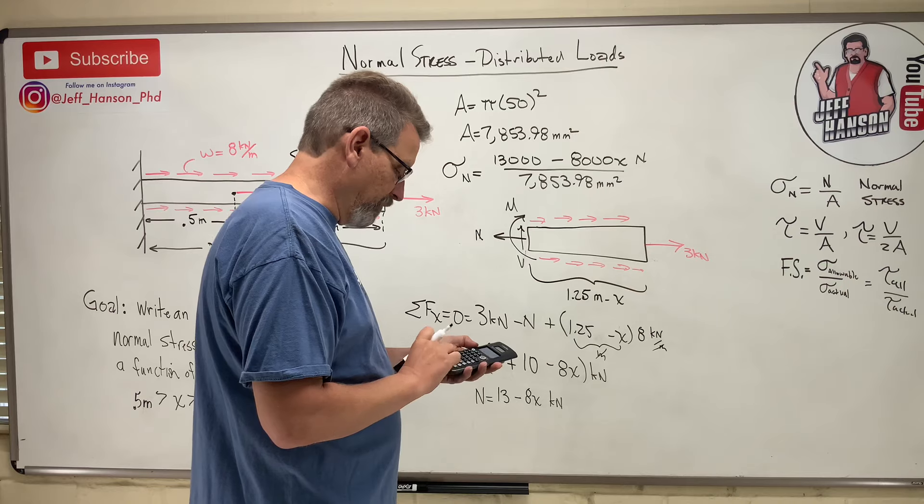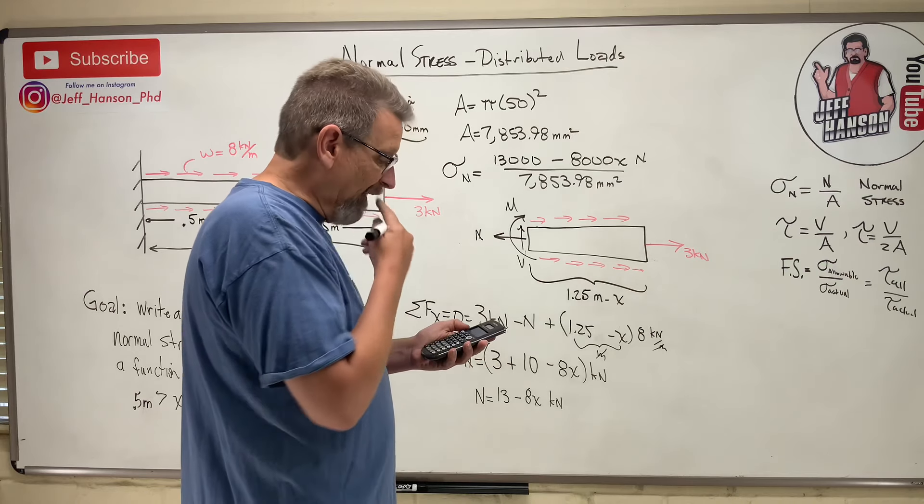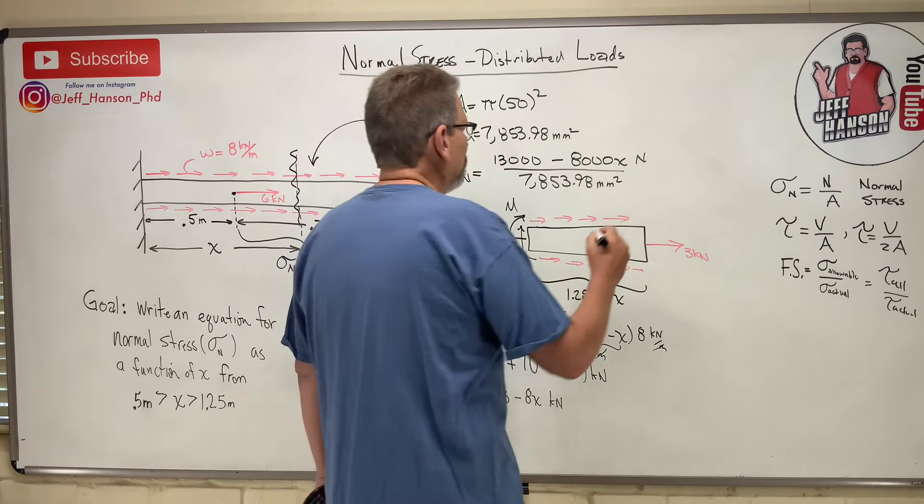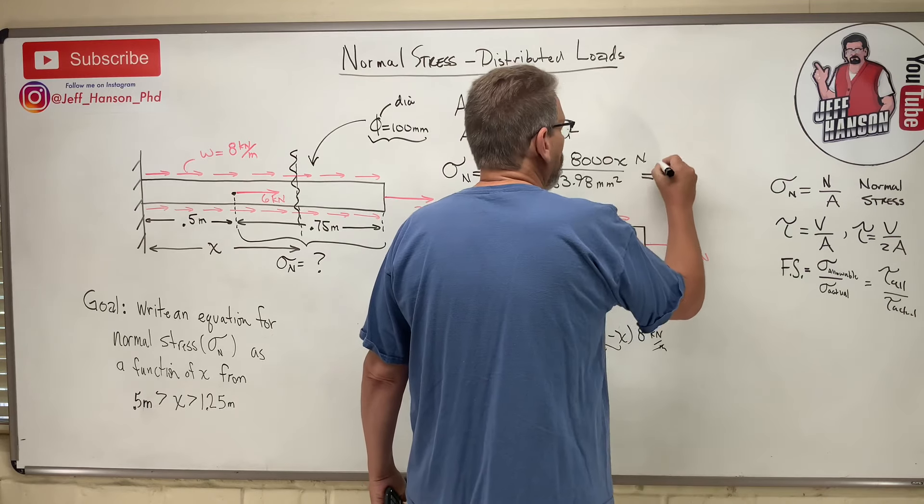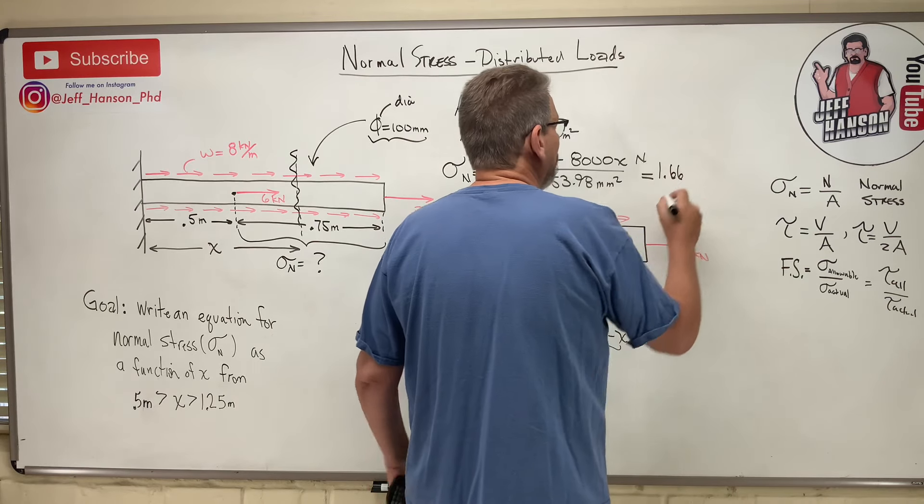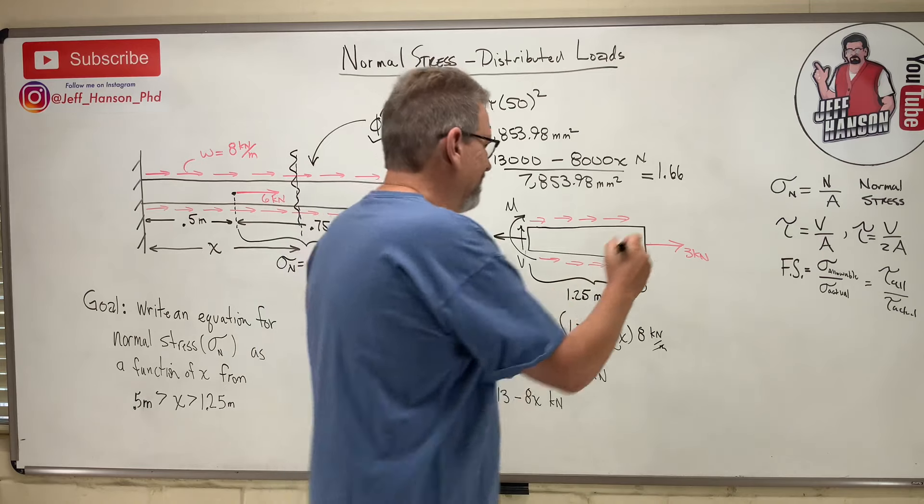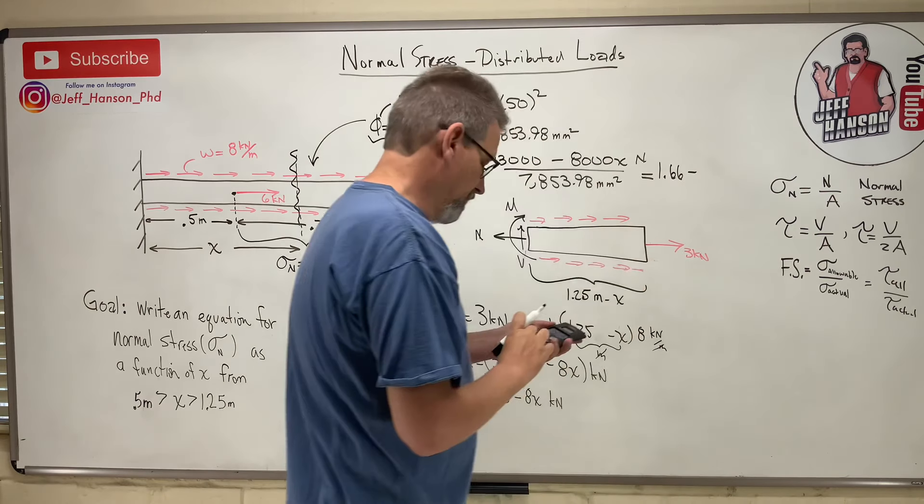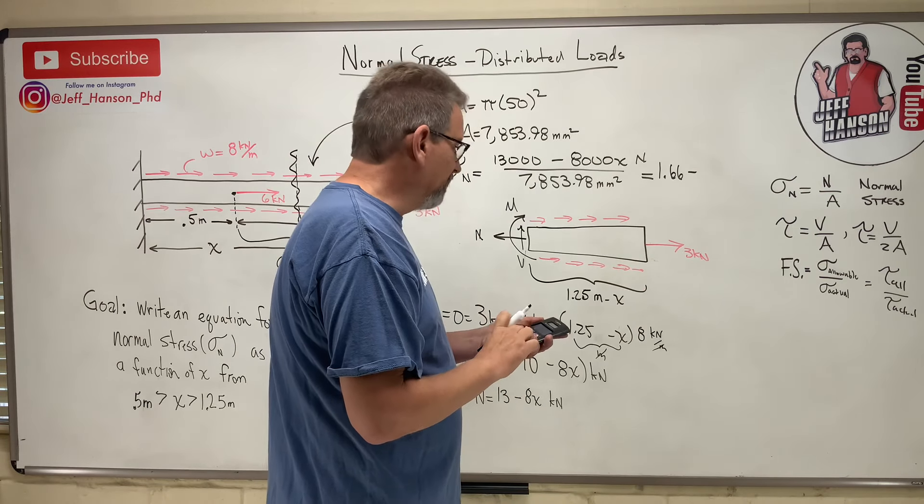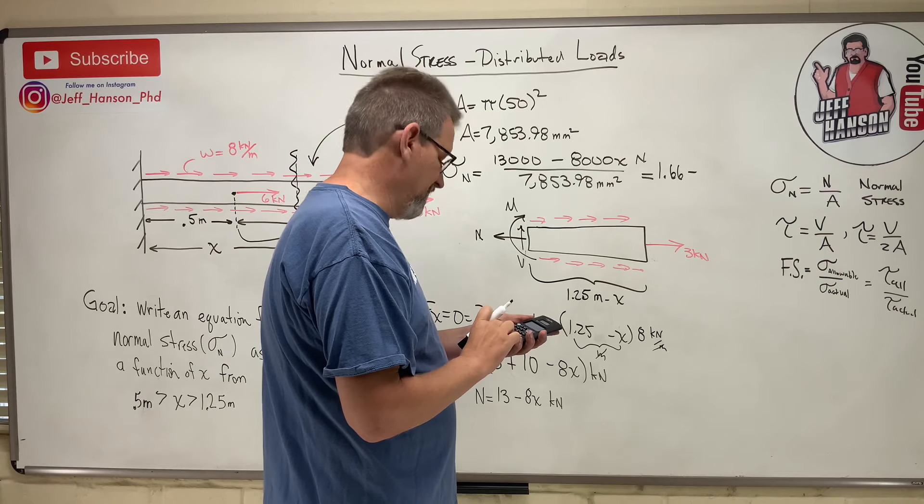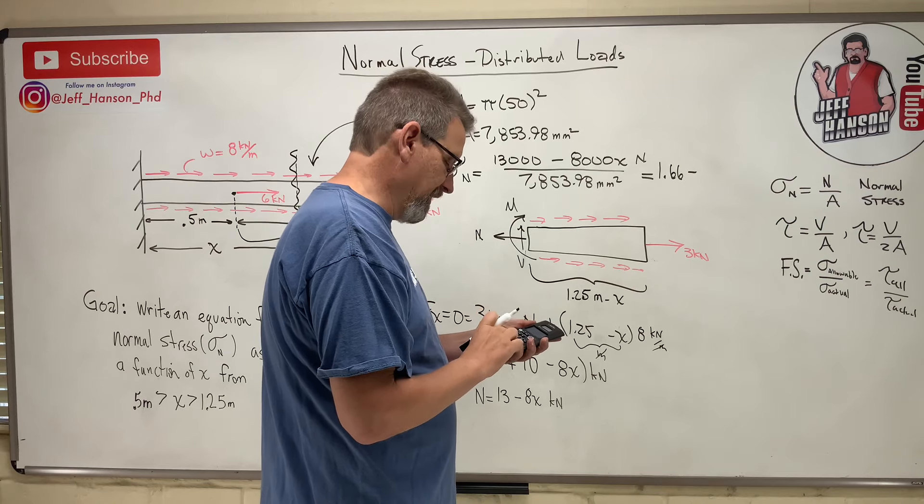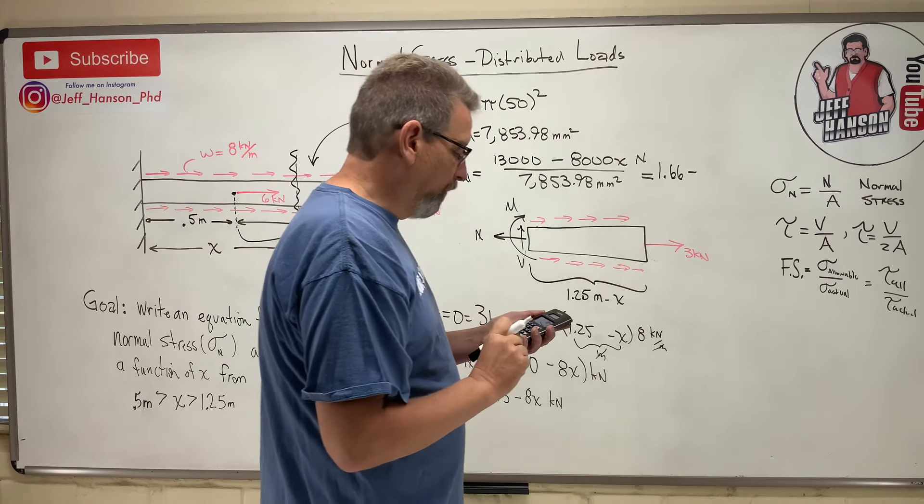7,853.98 equals 1.66. So this is going to equal 1.66 minus 8,000 divided by 7,853.98. 1.02.